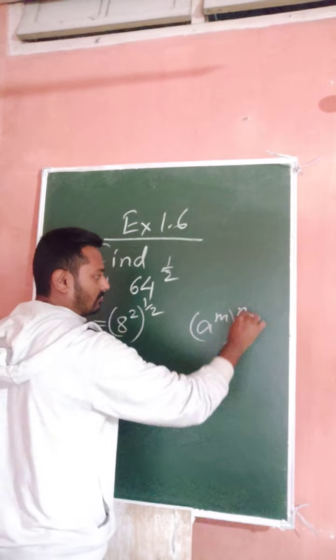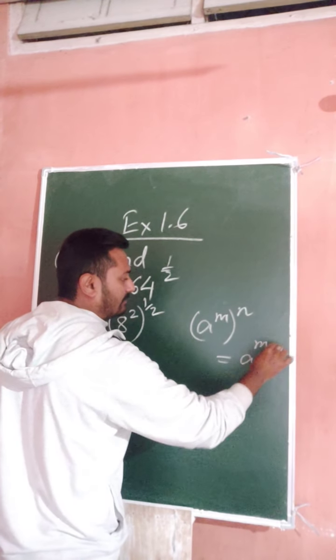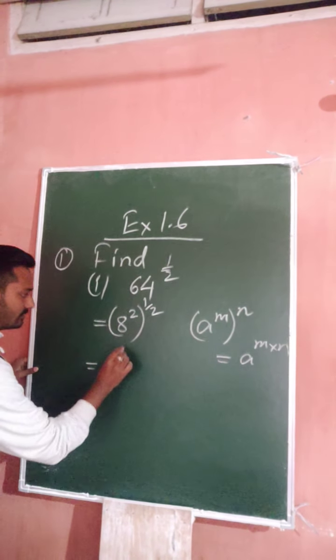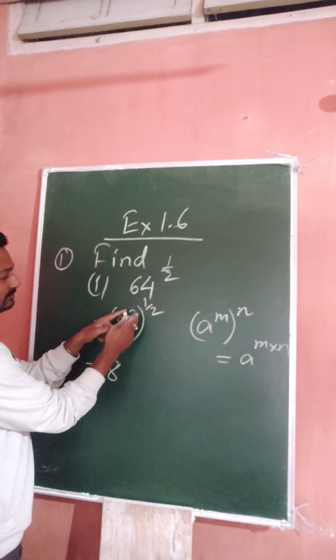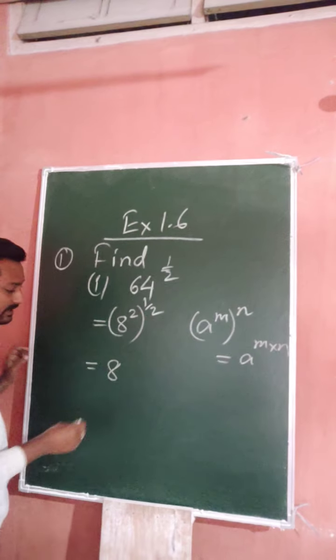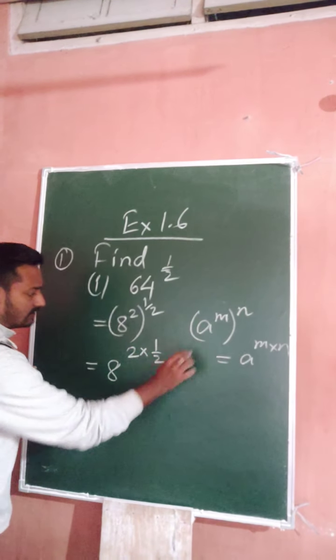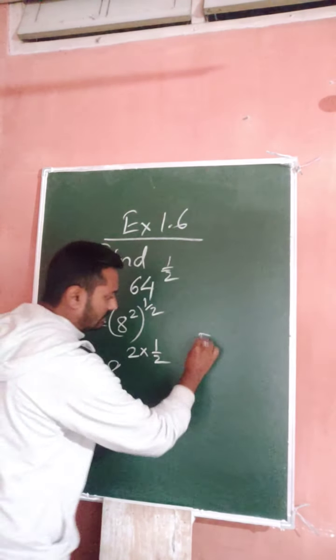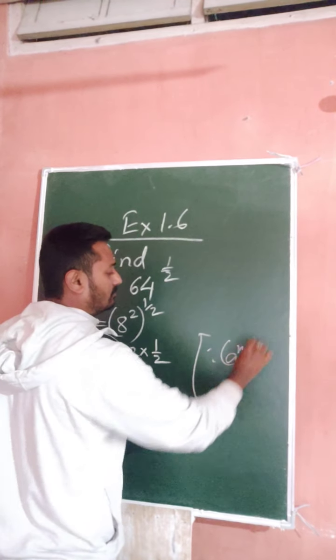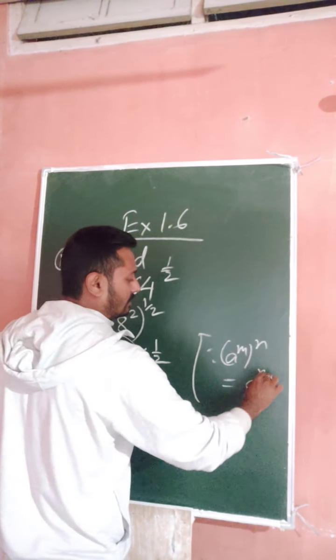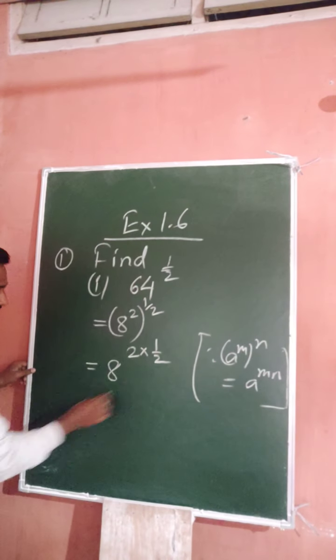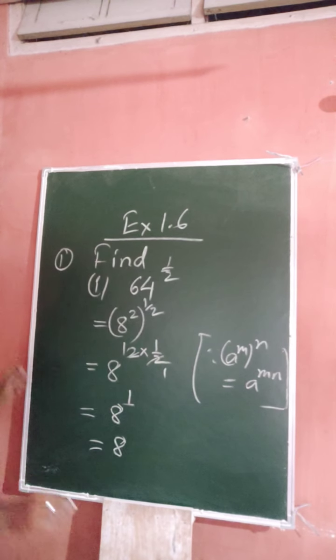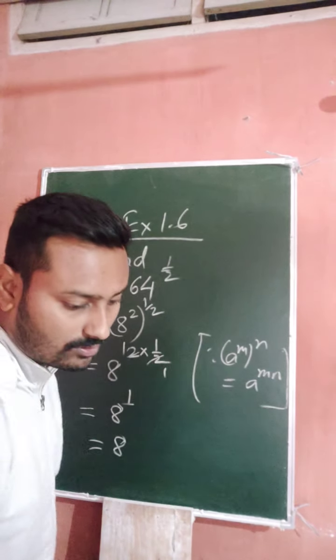Leave a whole bracket and remaining power same, one by two. Now you apply the law: a to the power m whole to the power n, which is a to the power m times n. Then these two powers become multiplication. So these become 8 to the power 2 times one by two, which equals 8 to the power one.